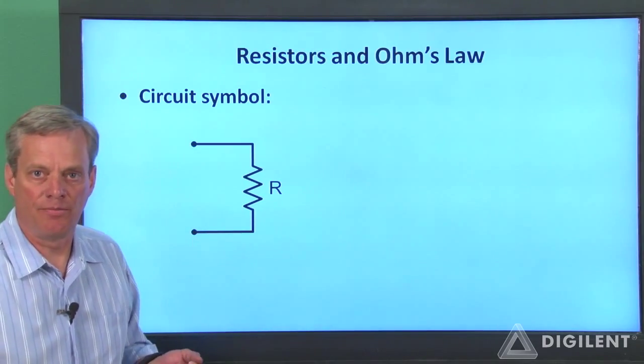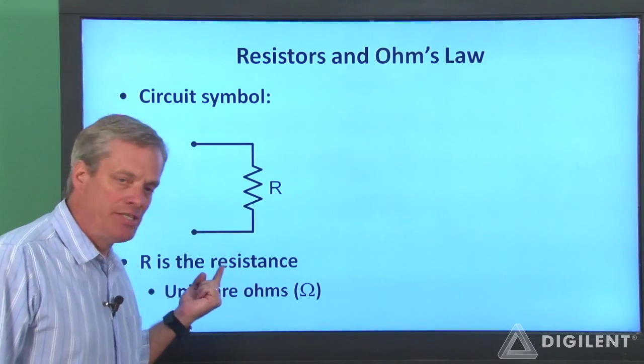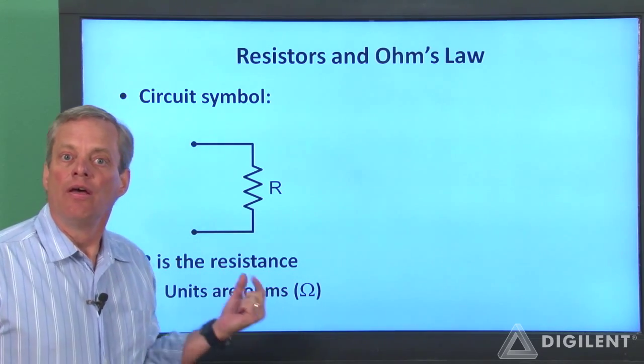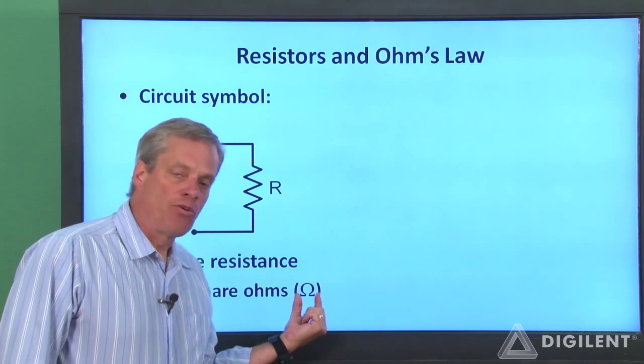This is the circuit symbol for a resistor. R is the resistance of the resistor. The units of resistance are Ohms. They are represented by the Greek letter Omega.